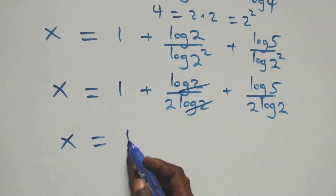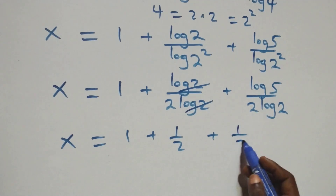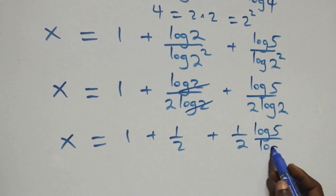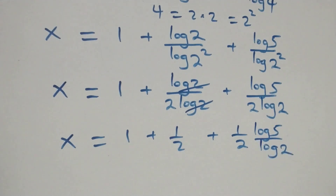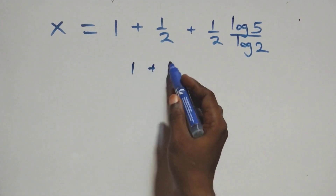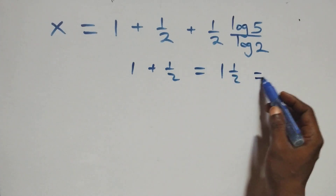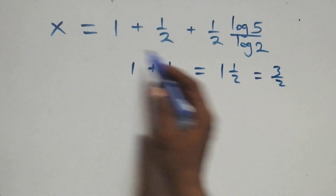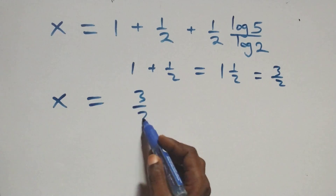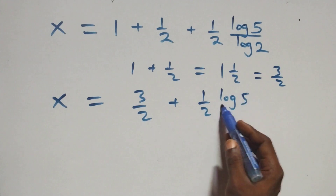The log twos in the first fraction cancel each other, leaving one half. So x equals to one plus one half, plus one half times log five over log two. Then one plus one half simplifies to three over two, giving x equals to three over two plus one half times log five over log two.